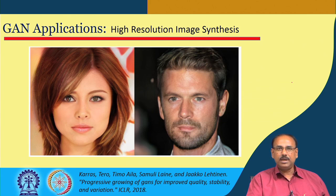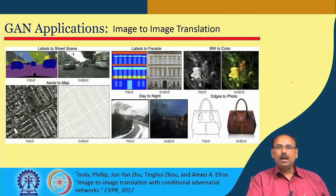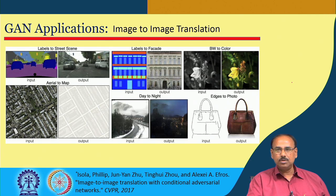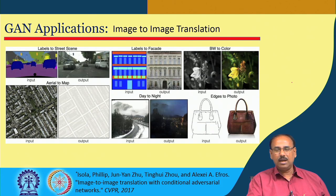GAN has been applied in many domains. A paper at ICLR 2018 used GAN for synthesis of high resolution images — the synthesized images look remarkably like real images, showing the power of generative adversarial networks. It has also been used for image-to-image translation: a CVPR 2017 paper showed that given semantic segmentation of a scene, GAN can synthesize real-looking images. Similarly, from input labels you can generate real-looking images, and given a grayscale image you can generate color images.